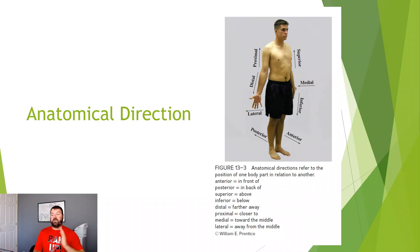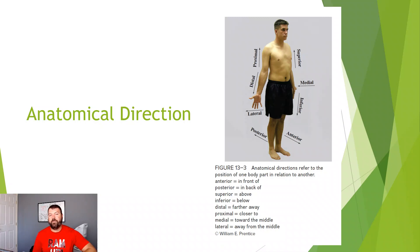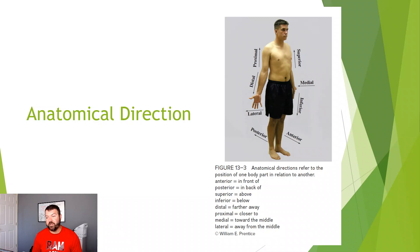These are really important terms when comparing one structure to the next. For example, my nose is anterior to my ears, and my nose is also medial to my ears. My ears are lateral to my nose. Anterior is also called ventral, and posterior or dorsal is to the back.